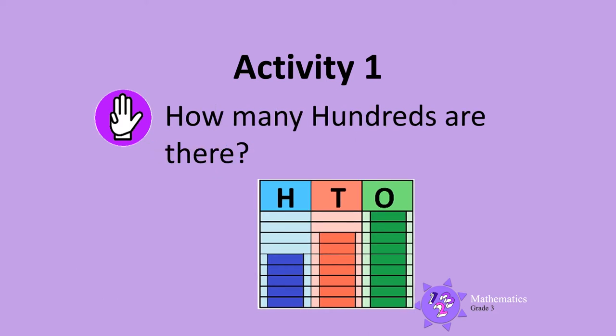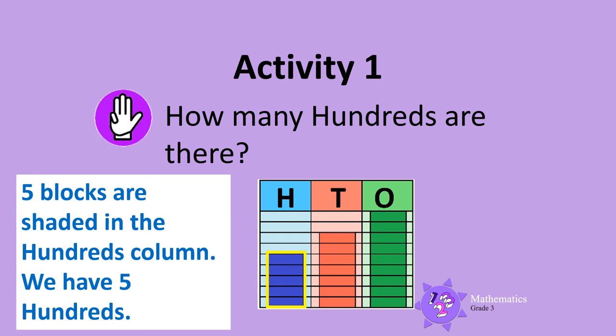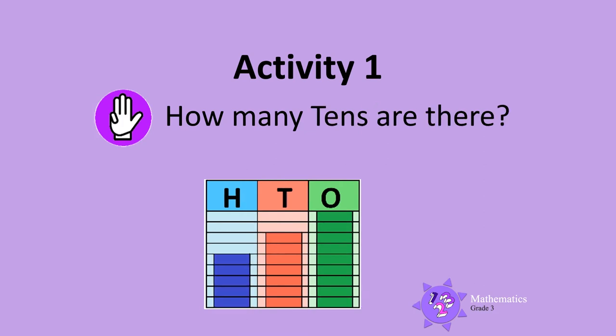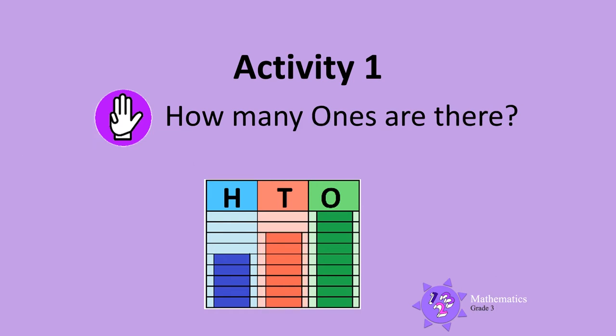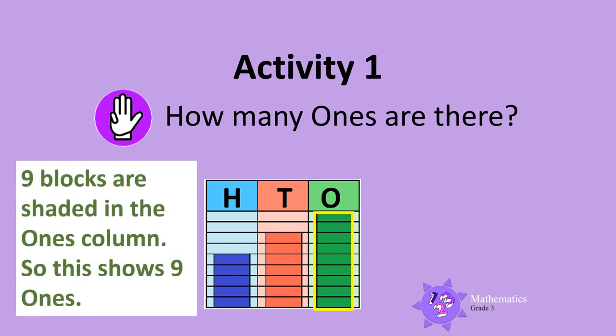How many hundreds are there in this place value diagram? 5 blocks are shaded in the hundreds column, so we have 5 hundreds. How many tens are there? 7 blocks are shaded in the tens column, so we have 7 tens. And how many ones are there? 9 blocks are shaded in the ones column, so this shows 9 ones.